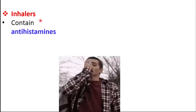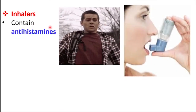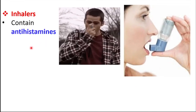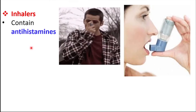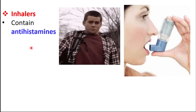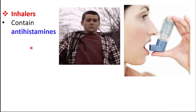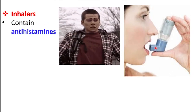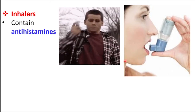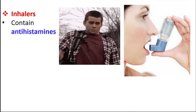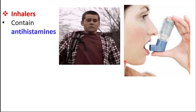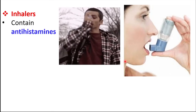Inhalers are used in the treatment of asthma. Inhalers contain antihistamines. Histamines cause inflammation of bronchi and bronchioles, constricting the bronchi and decreasing airflow to the lungs, causing difficulty in breathing. When inhalers are used, the antihistamines present in them reach the airways, decrease the inflammation in bronchi and bronchioles, and the bronchi and bronchioles become normal. More air can reach the lungs and the persons get relief by using these inhalers.